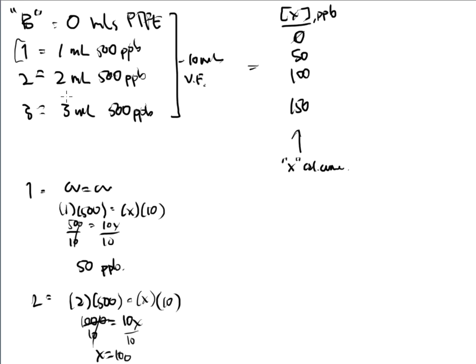Once all standards are made, mixed, and ready to go, I run them on the instrument and get absorbances or signals associated with each sample. Let's pretend I ran these and the numbers are: 0.361, 0.487, 0.611, and 0.789 — those are the absorbance values received from the instrument.